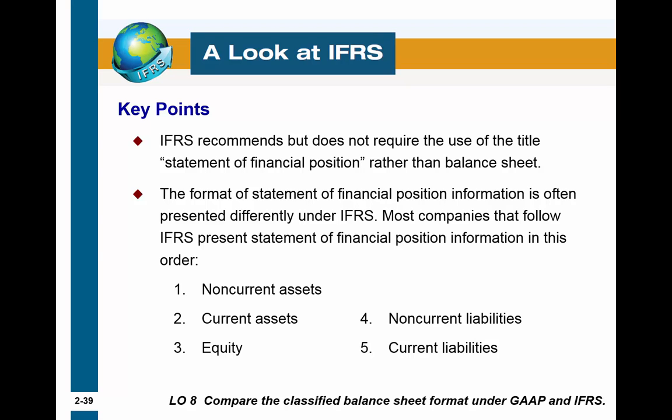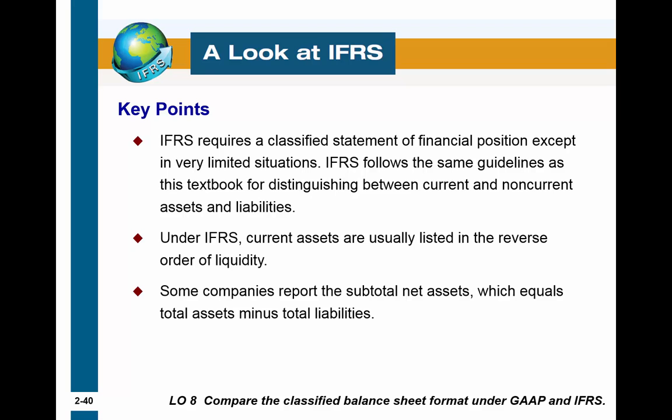The last section is a look at IFRS — International Financial Reporting Standards — compared to U.S. GAAP. A few key differences: under IFRS, a balance sheet is called a 'statement of financial position.' IFRS puts assets and liabilities in a slightly different order — non-current assets first and current assets second, whereas under GAAP current assets come first. IFRS requires a classified statement of financial position, and current assets are usually listed in reverse order of liquidity, while GAAP starts with the most liquid assets like cash.